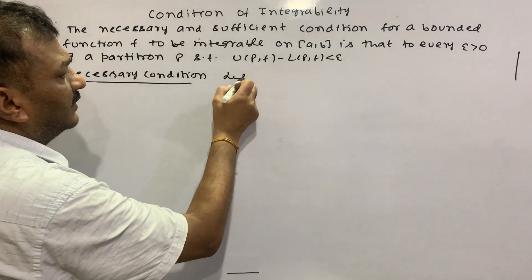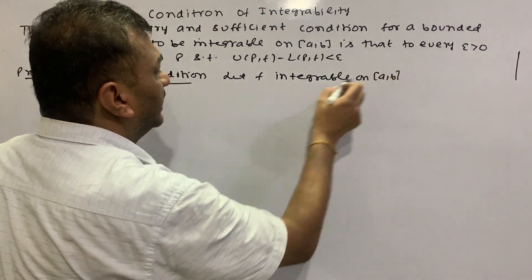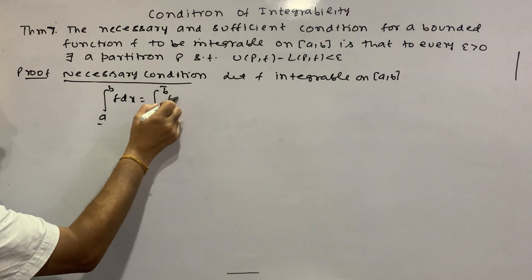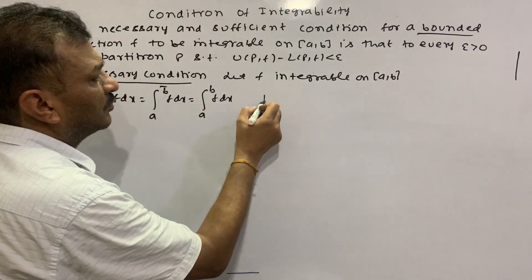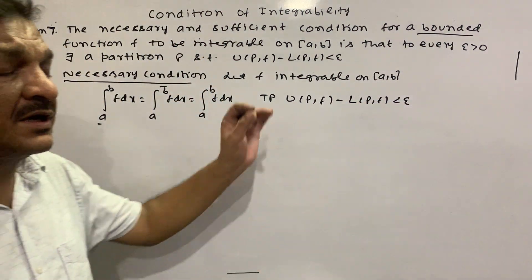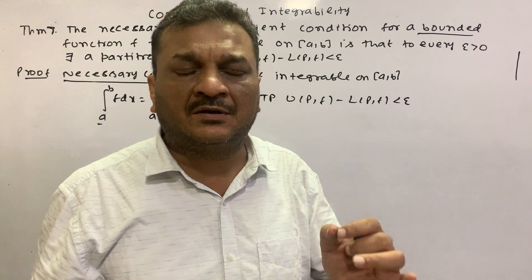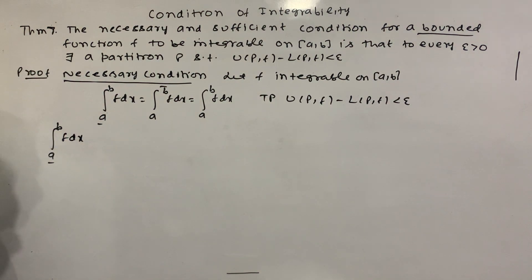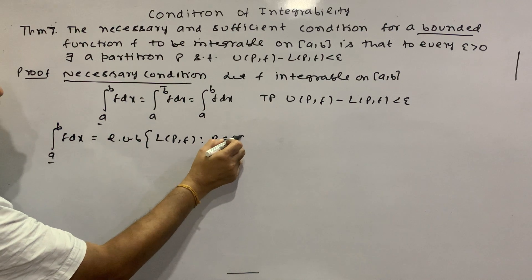For the necessary condition, let f be integrable on [a, b]. By definition, the lower Riemann integral equals the upper Riemann integral equals the integral from a to b of f(x) dx. The given condition is that f is a bounded function. By the order completeness property, we have greatest lower bound and least upper bound. The lower Riemann integral equals the least upper bound of LPf such that P belongs to the family of partitions.